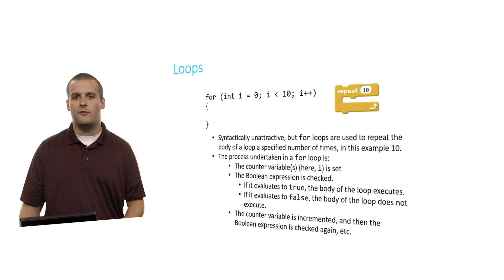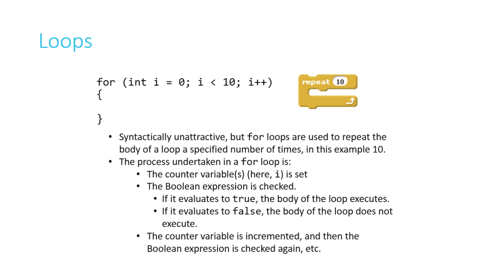Lastly, we have a for loop. For loops are kind of syntactically unattractive, and there's a lot going on here, so bear with me as we try and break these pieces apart. Generally, the use case of a for loop is you want to repeat something a specific number of times. In this example here, I have the repeat block from Scratch, which is analogous to the for loop in C, repeating something 10 times. And the for loop on the left there would do the same thing. This would go 10 times. If you're counting from 0, we increment i each loop, each pass through the loop, and we keep doing that until i is less than 10.